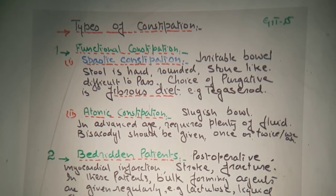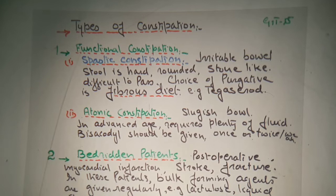So ispaghula husk is a fibrous diet — you know that is the first choice for this condition, for the softness of the stool. Fibrous diet should be taken. For example, a bulk-forming agent can be used for spastic constipation.